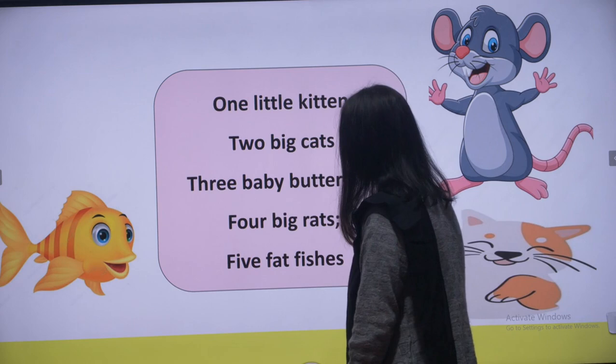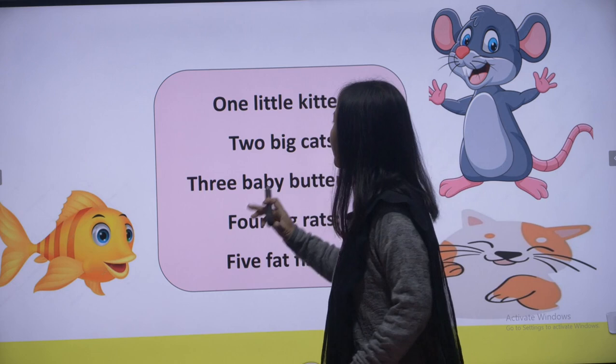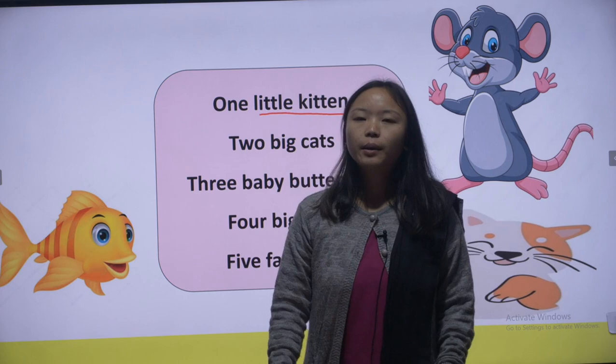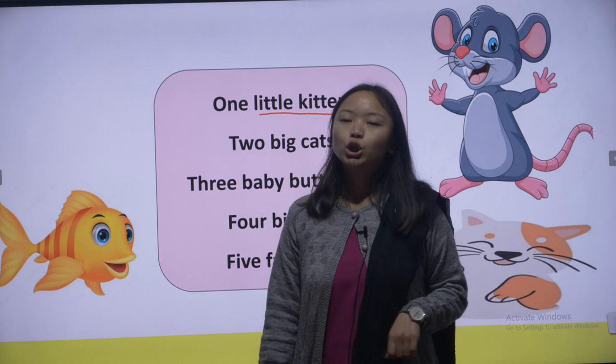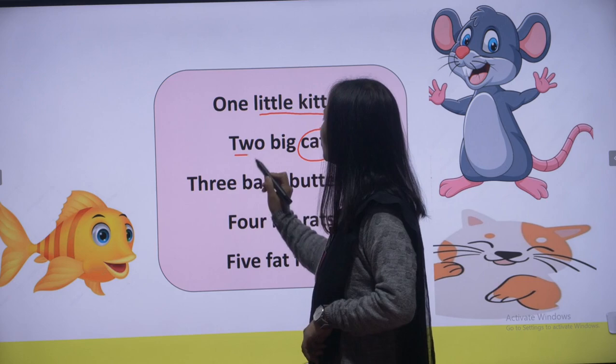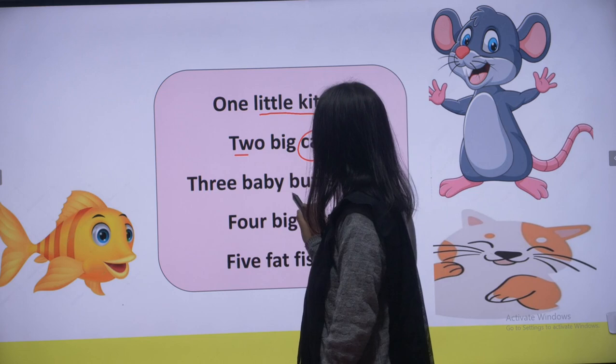There are fifteen animals in this poem. One little kitten — 'kitten' means a baby cat. So here there is one kitten. Two big cats — there are two cats and they are big. Three baby butterflies — there are three small butterflies.